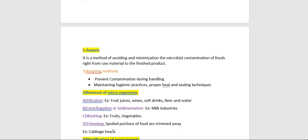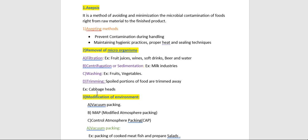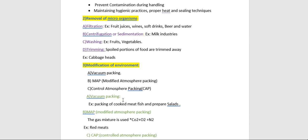Trimming the outer layers of cabbage heads is recommended for the manufacture of sauerkraut. The third type of method is modification of environment. Microbial growth and thus spoilage of foods can be retarded by modifying the storage environment. Three different procedures are used to modify the atmospheric surroundings of a product: vacuum packing, modified atmosphere packing (MAP), and controlled atmosphere packing (CAP). In vacuum packing, the product is placed in a bag from which air is evacuated, causing the bag to collapse around the product before it is sealed.